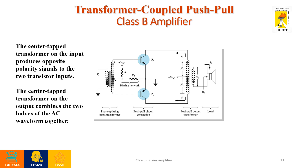We will now discuss in detail about the transformer coupled push-pull amplifier. In this circuit we have two transformers — one is the input transformer or driver transformer, and another is the output transformer. Both are center-tapped transformers. The driver transformer provides different polarity signals to the two transistors. Here we have used two transistors, Q1 and Q2, both of the same type — NPN transistors.